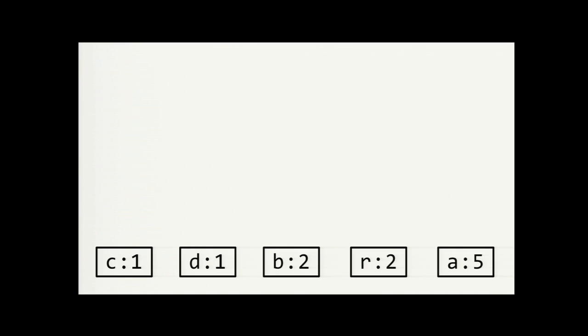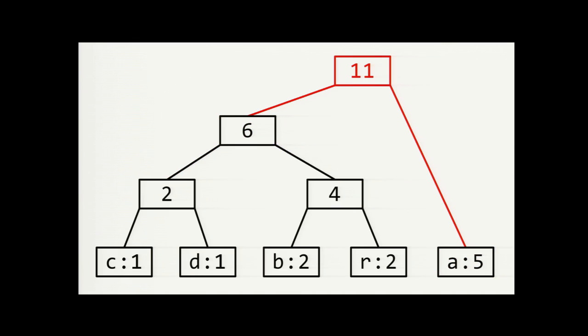Then we set these as the frequencies of the leaf nodes of a binary tree. And the next step is to find the two nodes that have the lowest value that do not have a parent. So that would be C and D. Then we create a parent node for them and assign it the sum of the children's values. One plus one is two. Then we find the next two parentless nodes with the lowest values. We can pick B and R. Add a parent, assign it the sum, which is four. The next two lowest are two and four. Combine them, assign the sum, which is six. And then the last two nodes without a parent are five and six. We combine them and the sum is 11. So our tree now has a root node and so we're done. And we can clear out the numeric values now because we don't need them anymore.